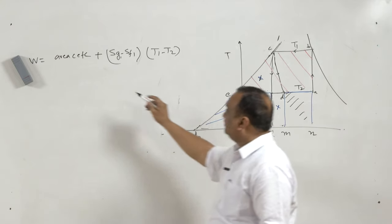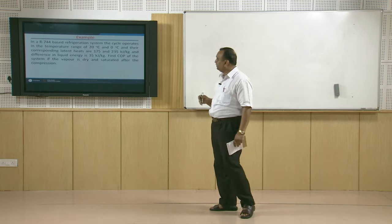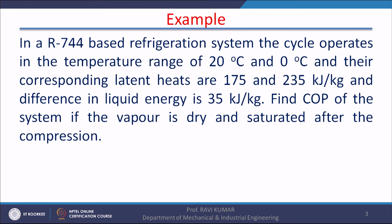In order to have a clearer understanding of this process, let us work out one example. An example is given: in an R-744 based refrigeration system — R-744 stands for carbon dioxide — the cycle operates in the temperature range of 20°C and 0°C, and their corresponding latent heats are 175 and 235 kilojoules per kg. The difference in liquid enthalpy at 20°C and liquid enthalpy at 0°C is 35 kilojoules per kg.